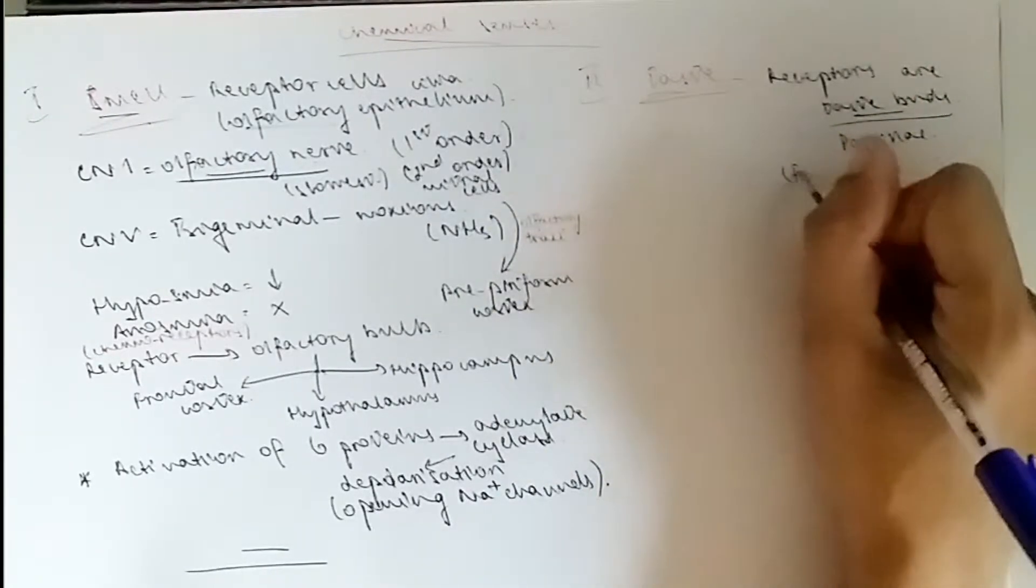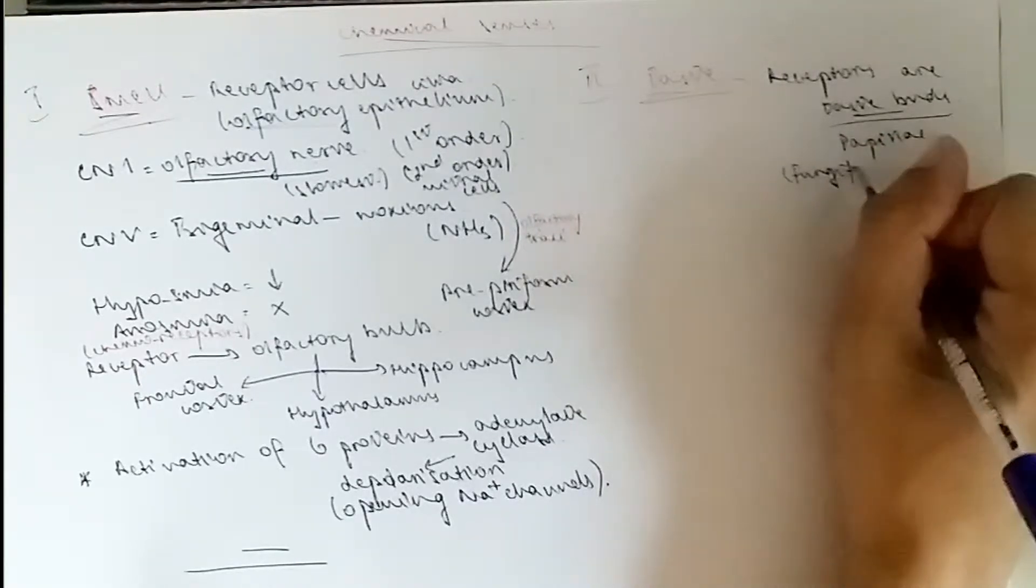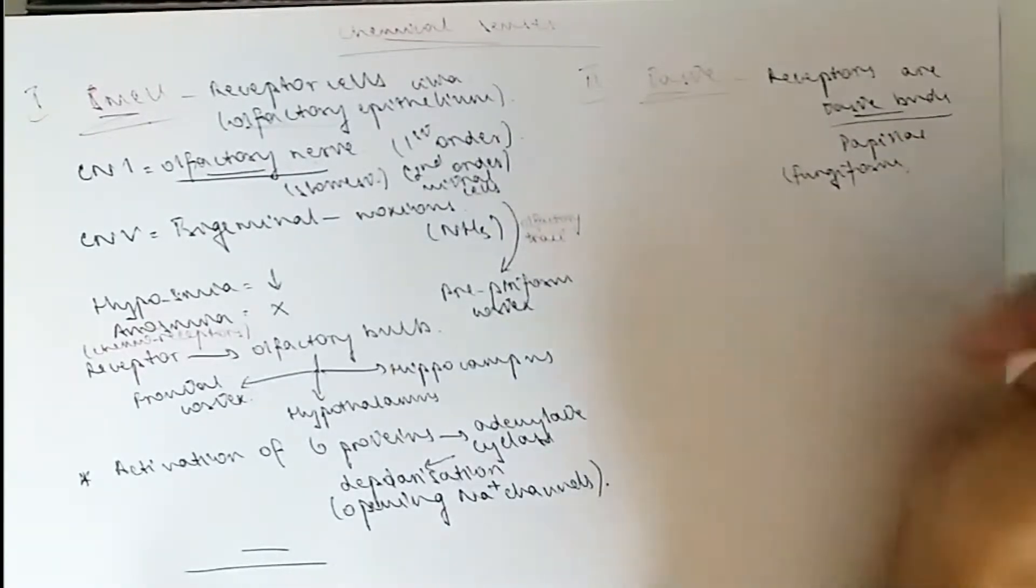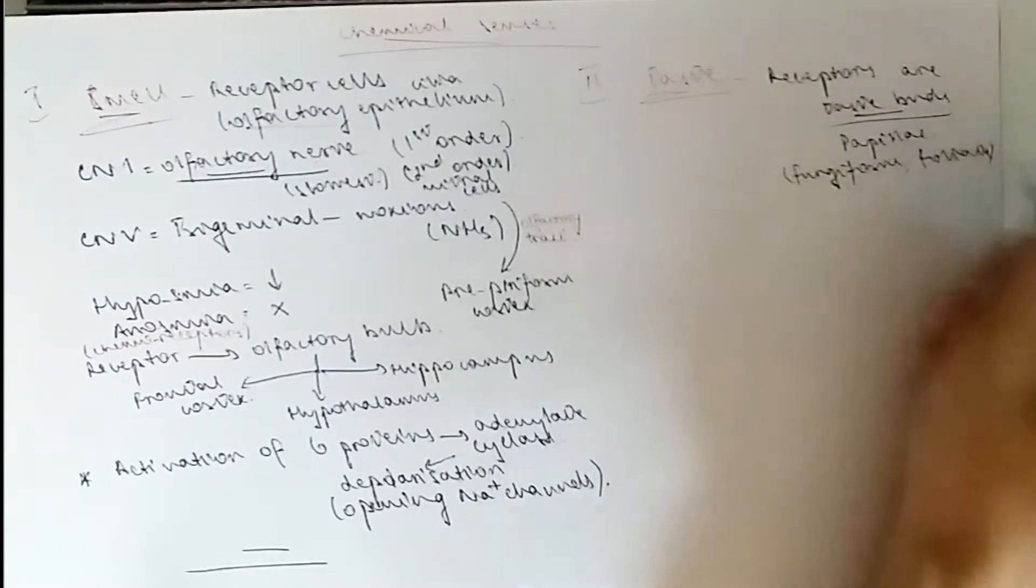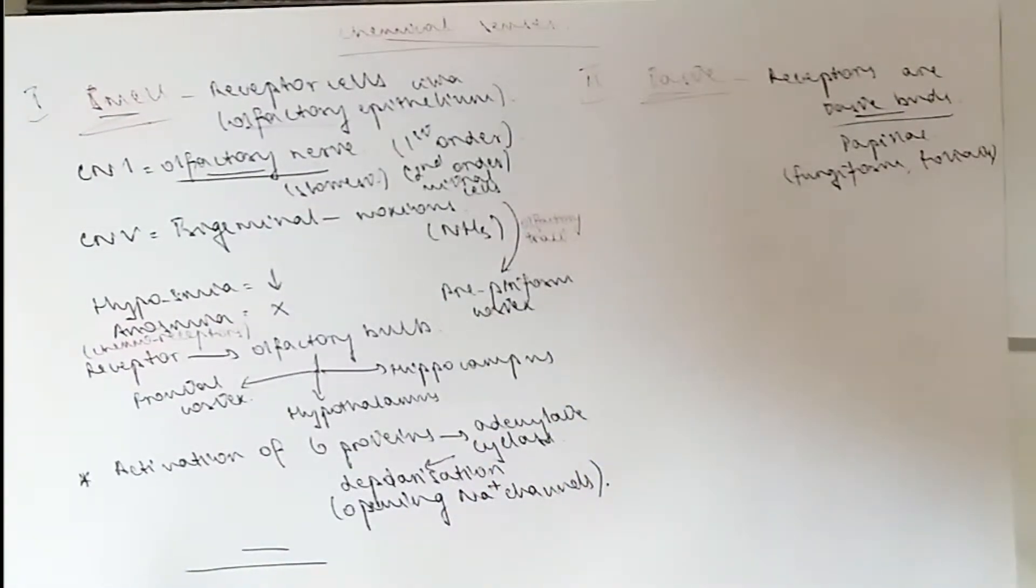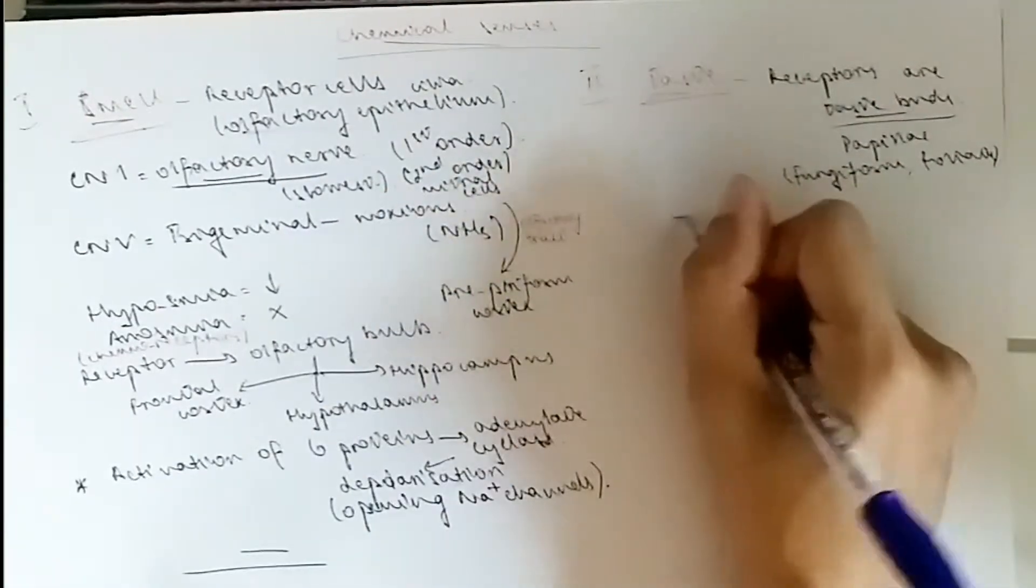There are several types, so we're going to focus on fungiform, which is in the anterior two-thirds of the tongue, and the foliate or the circumvallate, which is in the posterior part of the tongue.